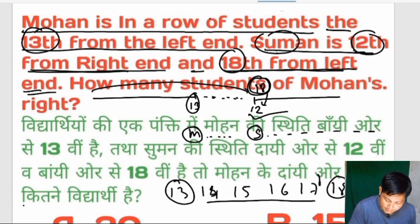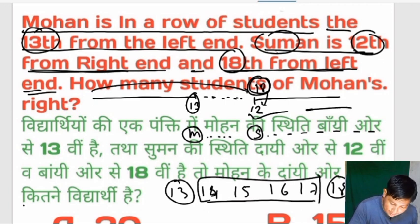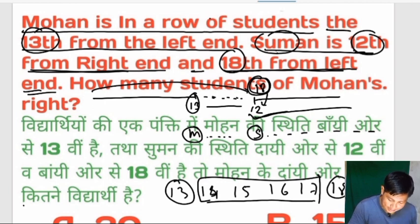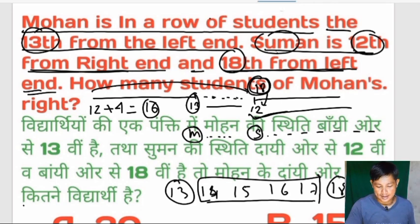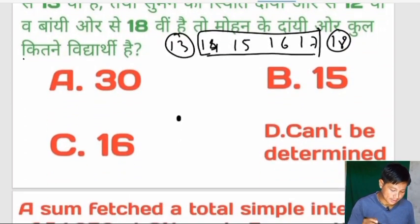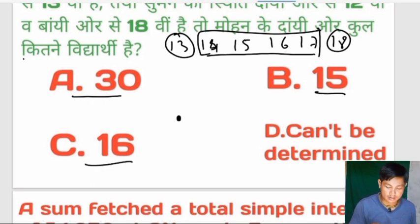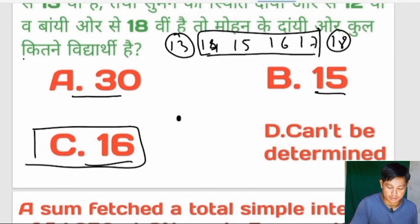The answer is 30. Options: 15, 16, and not determined — the answer is not determined.